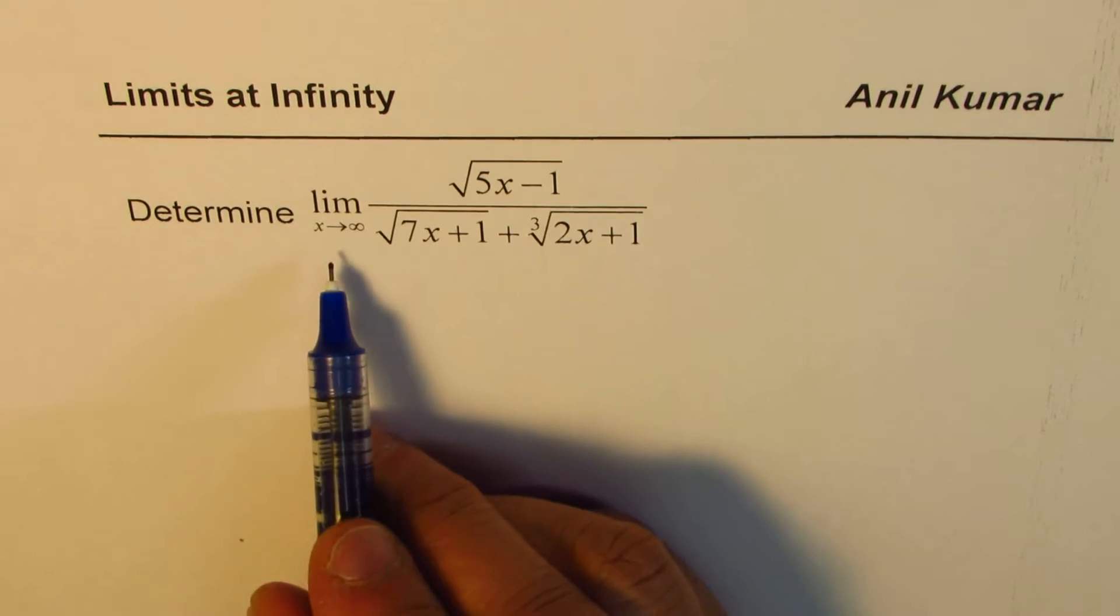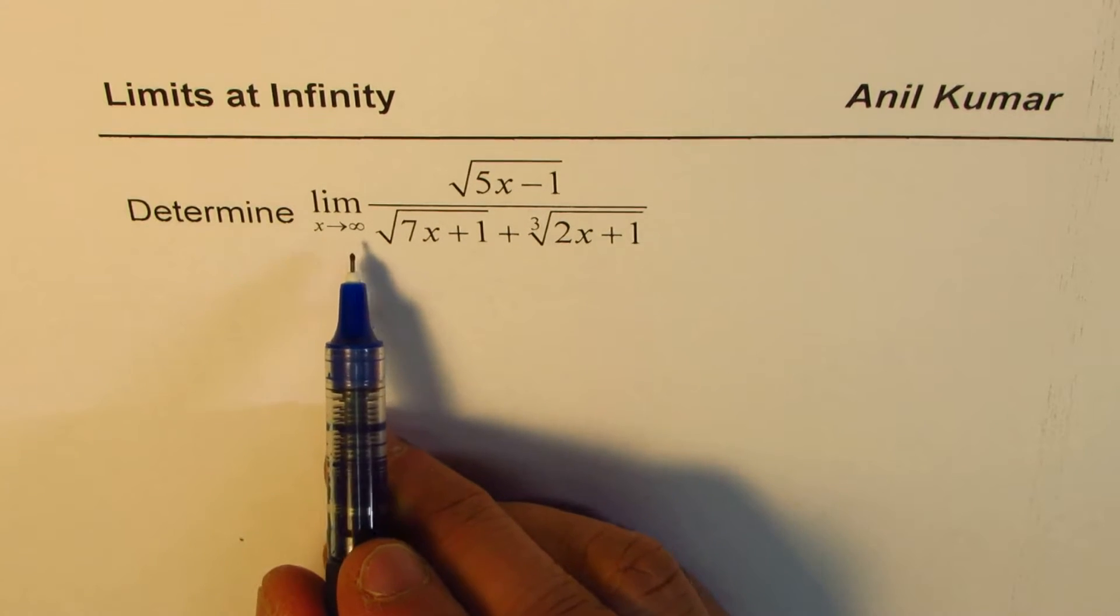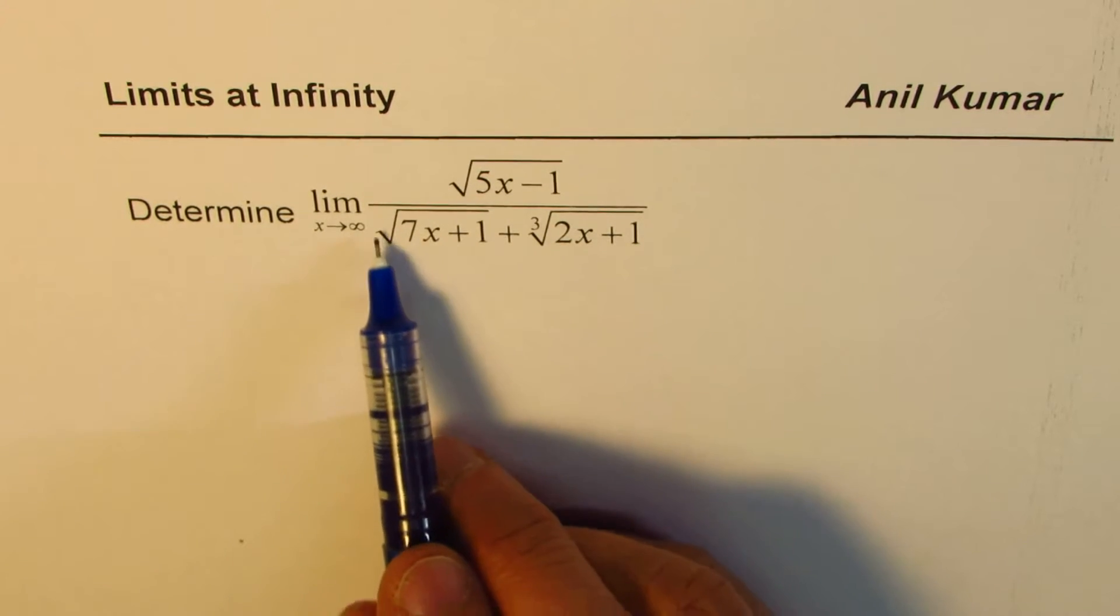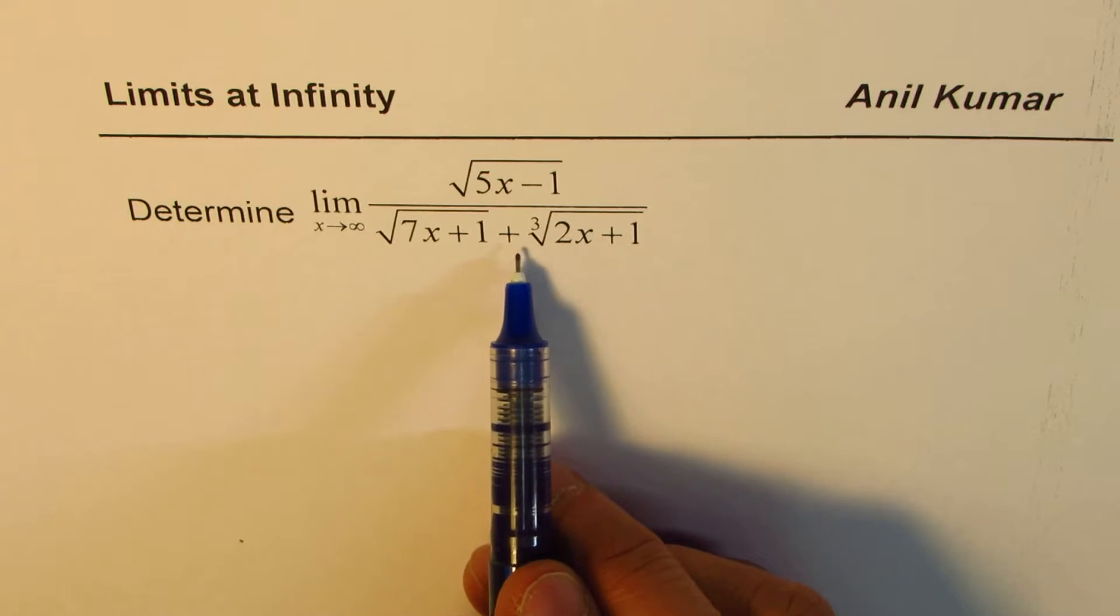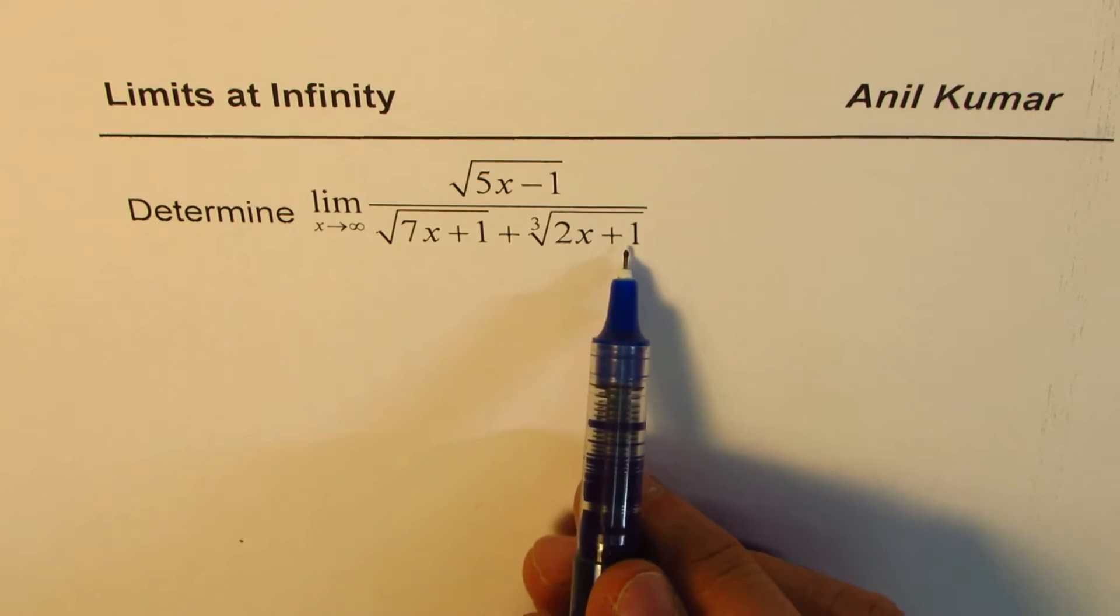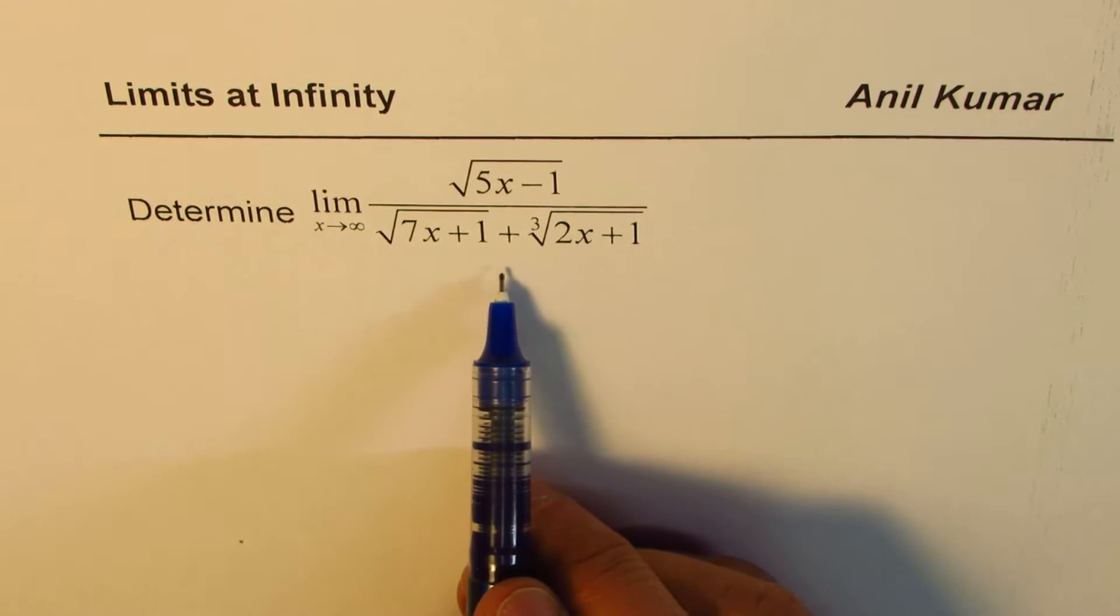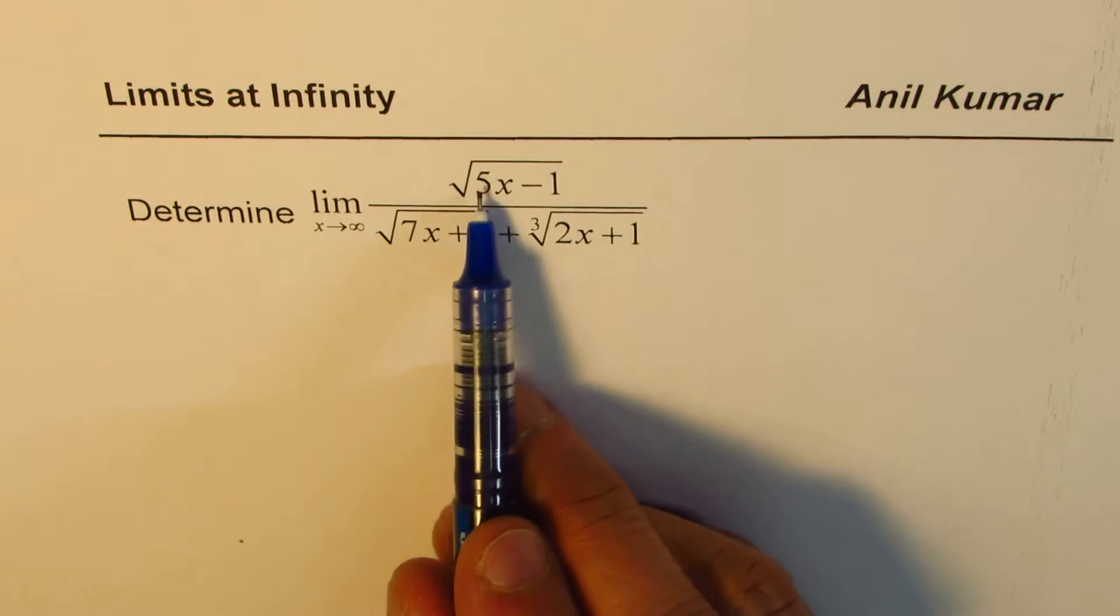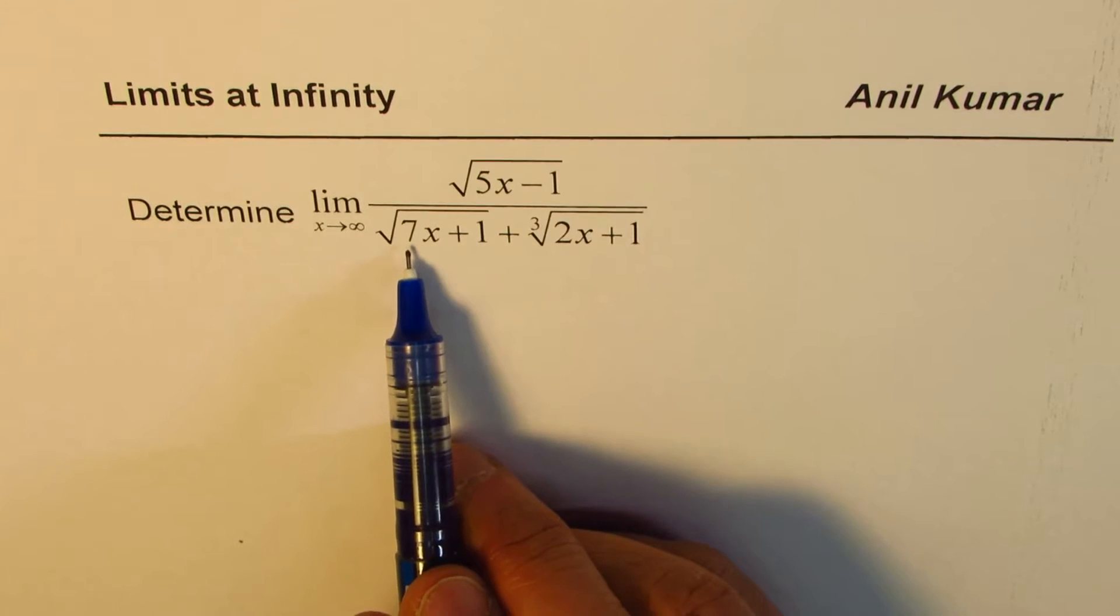We need to determine limit as x approaches infinity for square root of 5x minus 1 divided by square root of 7x plus 1 plus cube root of 2x plus 1. That's the question for you. The expected answer is the ratio of these two since the degree of both numerator and denominator is half, right?